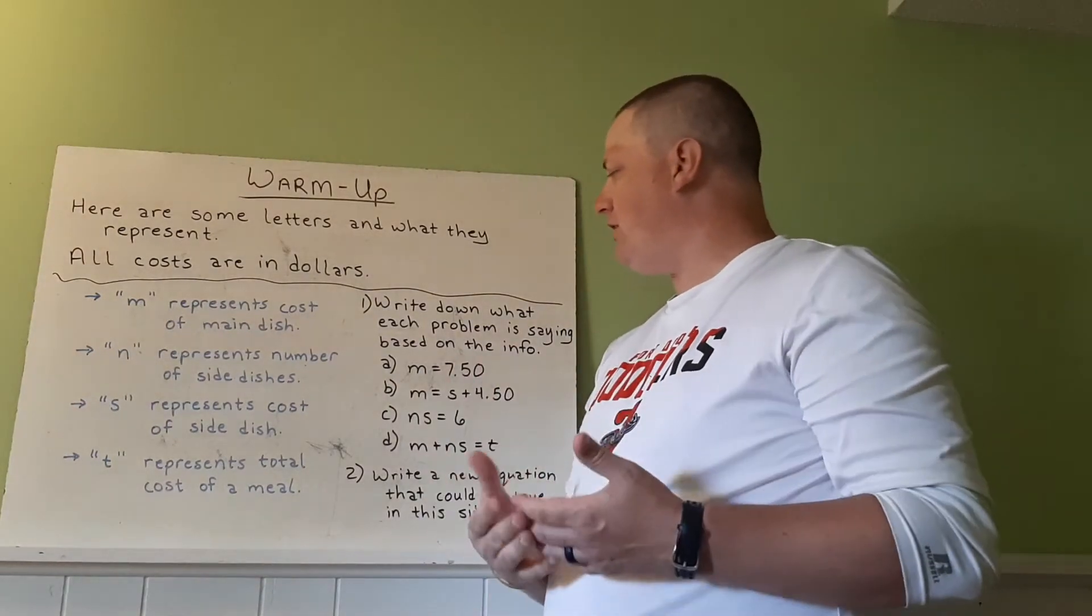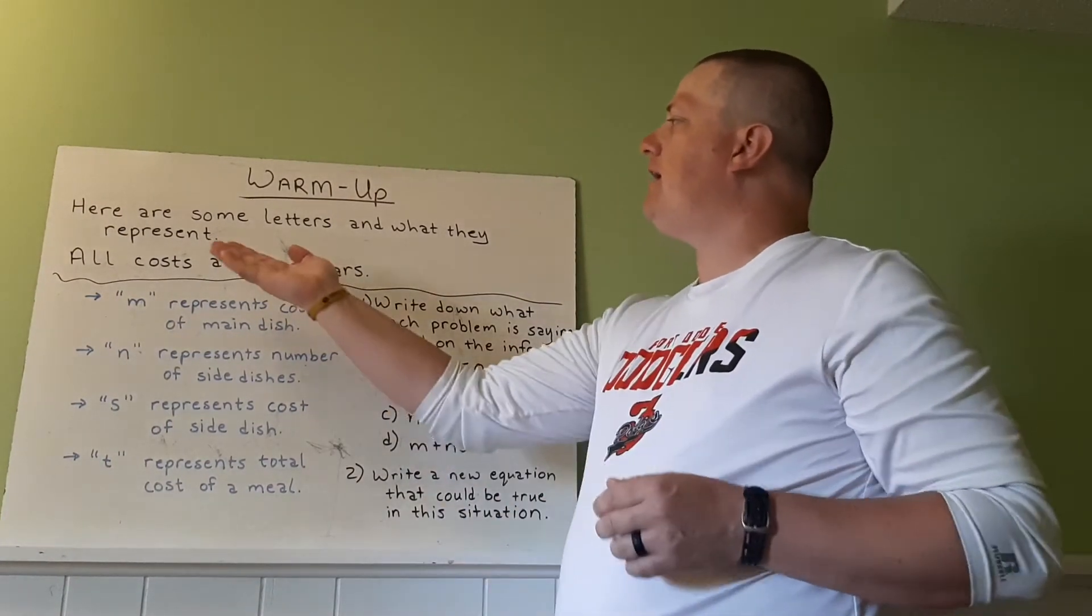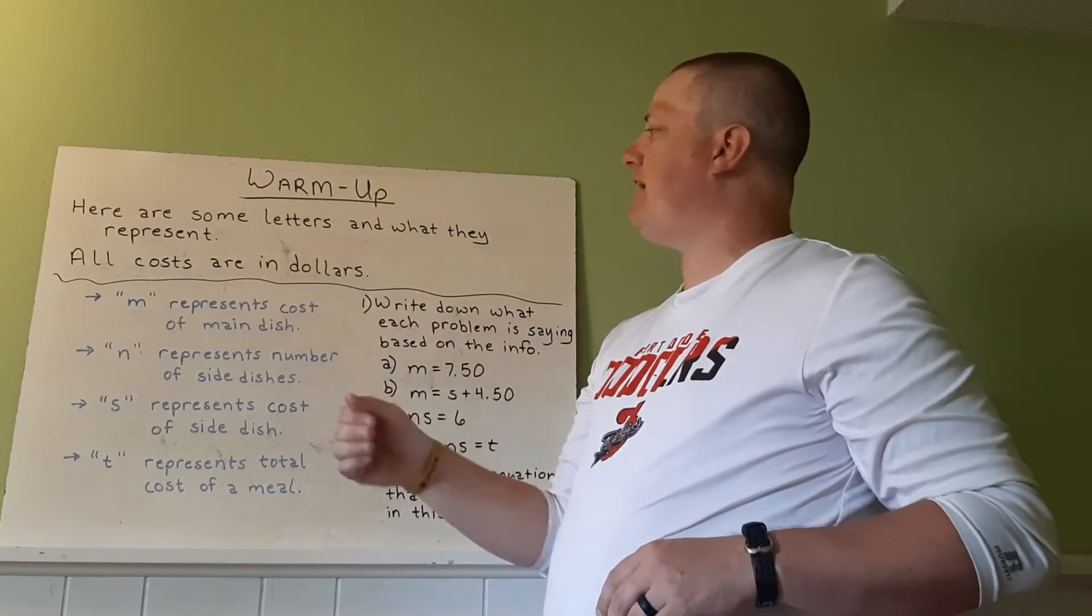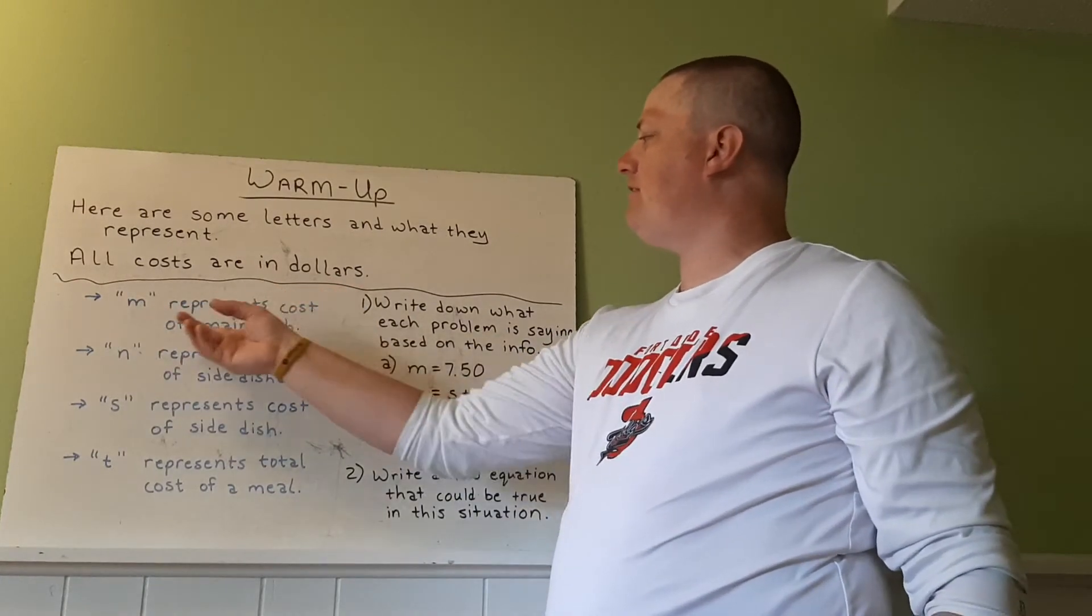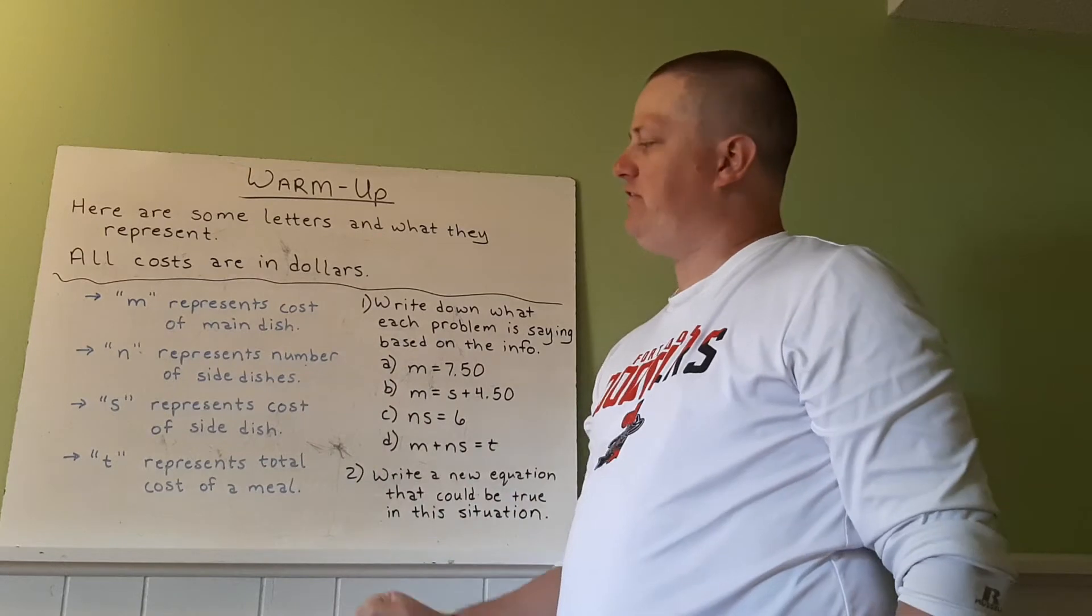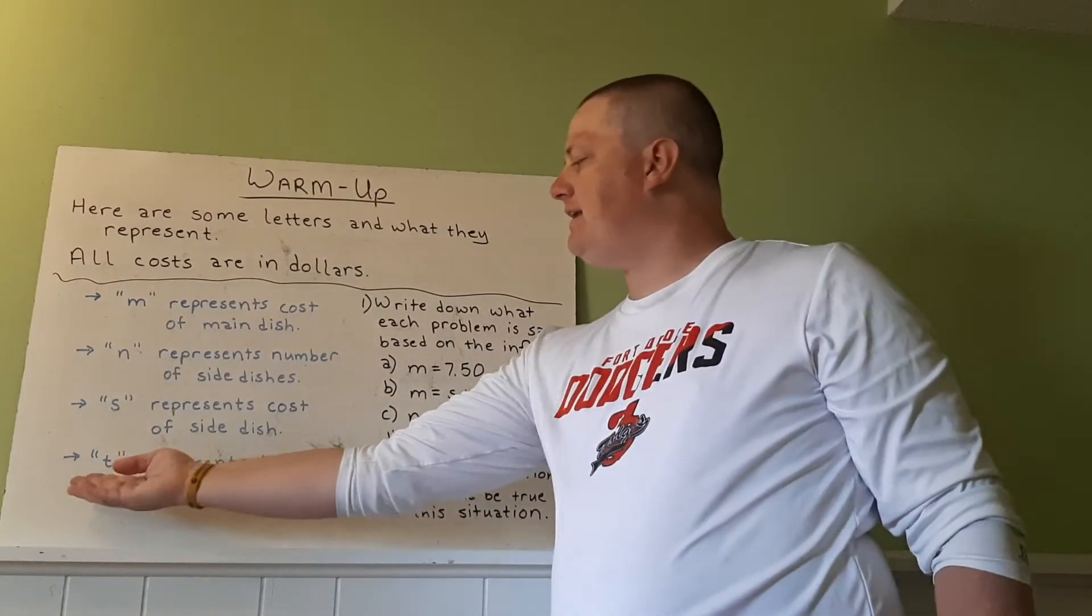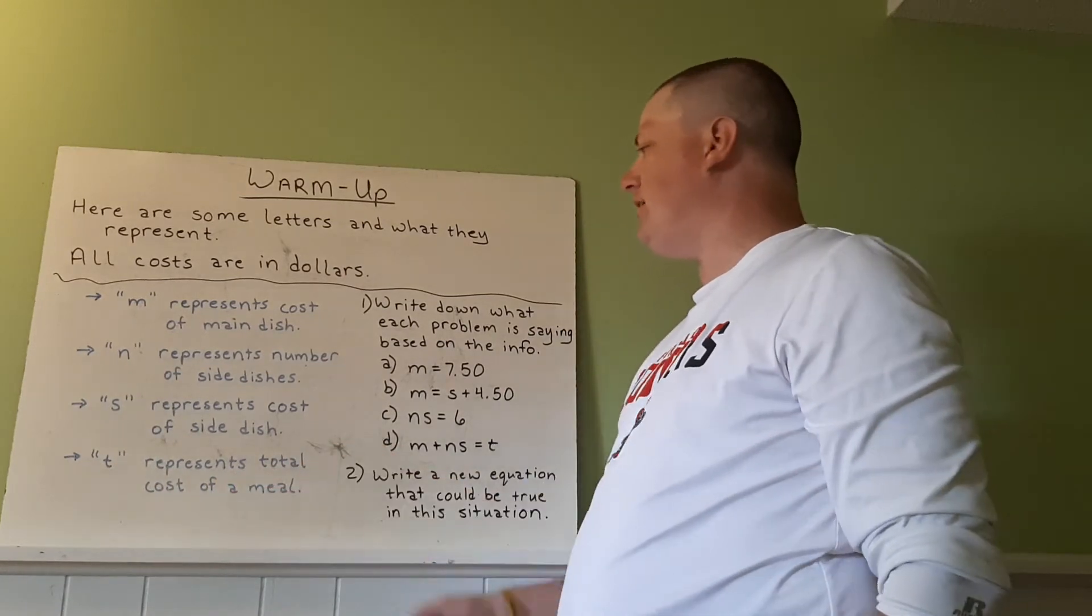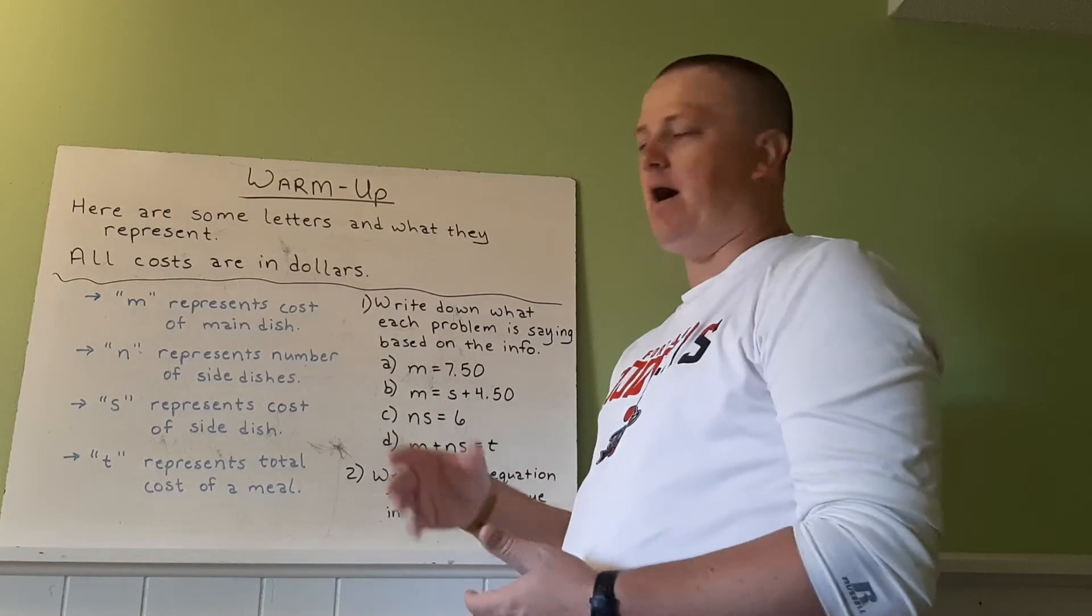All right. So I'd like you to try this and bring it to class tomorrow. So here are some letters and what they represent. All costs are in dollars. So the letter M represents cost of a main dish. N represents number of side dishes. S represents cost of a side dish. And T represents the total cost of a meal. We're using letters to represent things and then make problems.